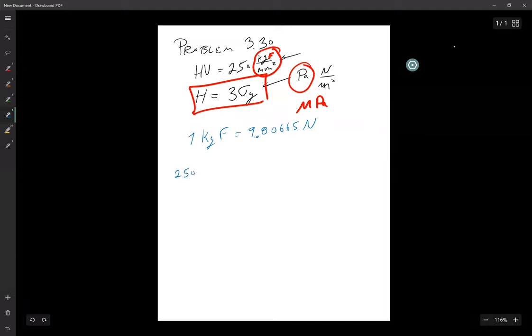So let's take 250 kilograms force divided by square millimeters times 9.80665 Newtons per kilogram force times 1000 millimeter squared per one meter squared, which gives us 2451.7 times 10 to the sixth Newton per meter squared. And that is our HV.